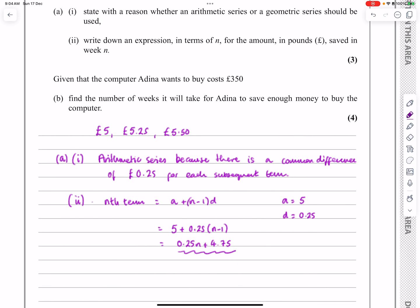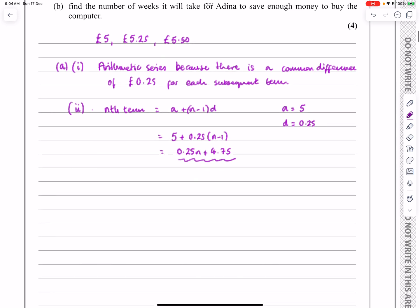Part B then says, find the number of weeks it will take for Adina to save enough money to buy the computer if the computer costs £350. Okay, so we're going to be using the sum to n terms this time, so B. The sum to n terms of an arithmetic series is given by n/2[2a + (n - 1)d]. And what we actually want is for that to equal 350.